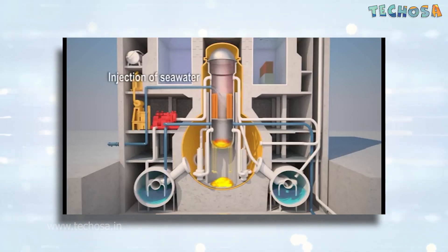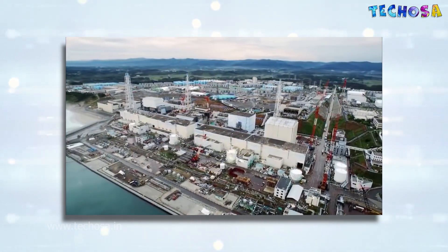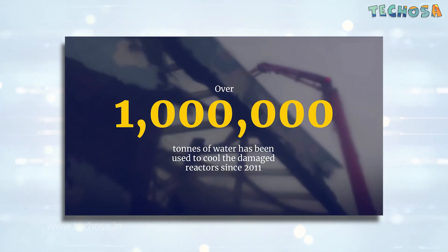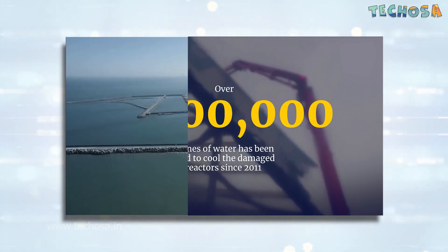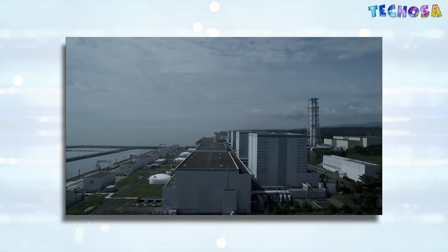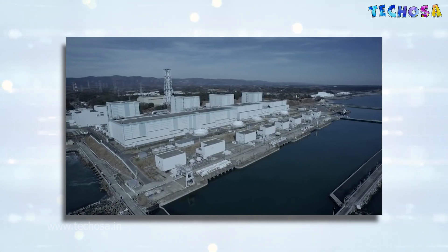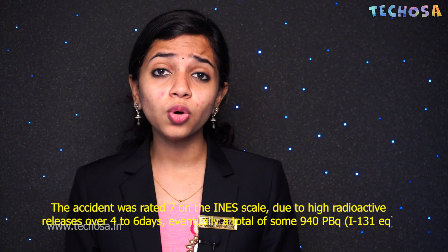Fresh water was not available in sufficient quantities, so they used salt water to cool the reactor. Even though the salt was chemically active, the reactors were filled with seawater until they became stable. Gradually the situation stabilized and the seawater was replaced with fresh water. As time passed, the reactor regained its normal condition, and by the end of December 2011, the Japanese government declared the nuclear power plant had reached cold shutdown state. The accident was rated seven on the INES scale due to the high radioactive release over four to six days.